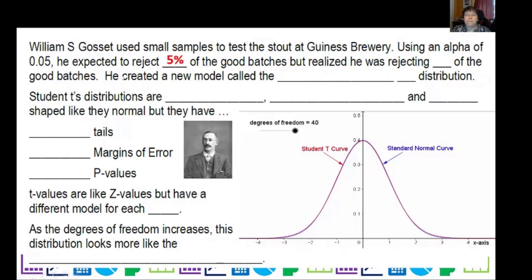He wanted an alpha .05. In other words, he expected to reject 5% of the good batches. But he found out he was actually rejecting 15% of good batches, and that's too much. So he created a new model based on his analysis called the student's t distribution.